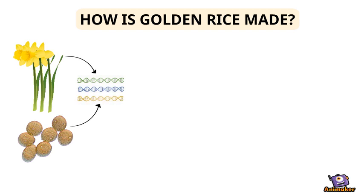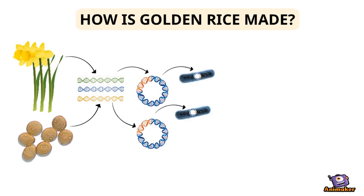These genes are inserted into small loops of DNA called plasmids inside a species of another bacterium called Agrobacterium tumefaciens.